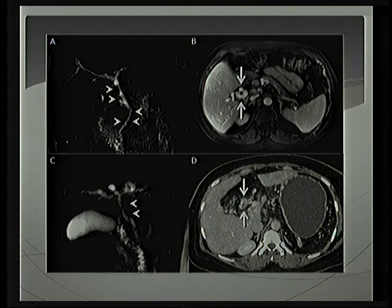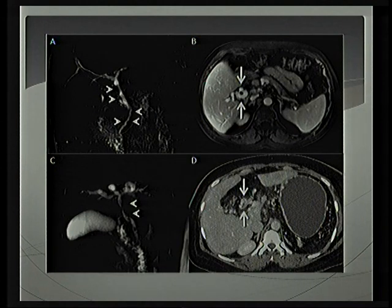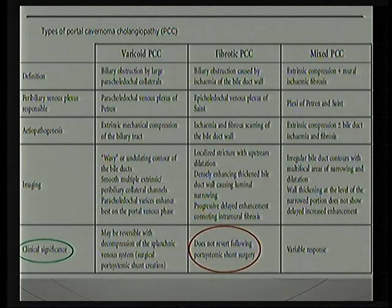This MRI picture depicts two kinds of biliopathy changes. The first picture shows the varicoid type of cavernoma, showing segmental dilatations of the CBD, and the second picture shows a fibrotic variety. The clinical significance is that the fibrotic variety of portal cavernoma cholangiopathy is usually non-reversible, and these patients require a separate surgery for their biliary tract obstruction.